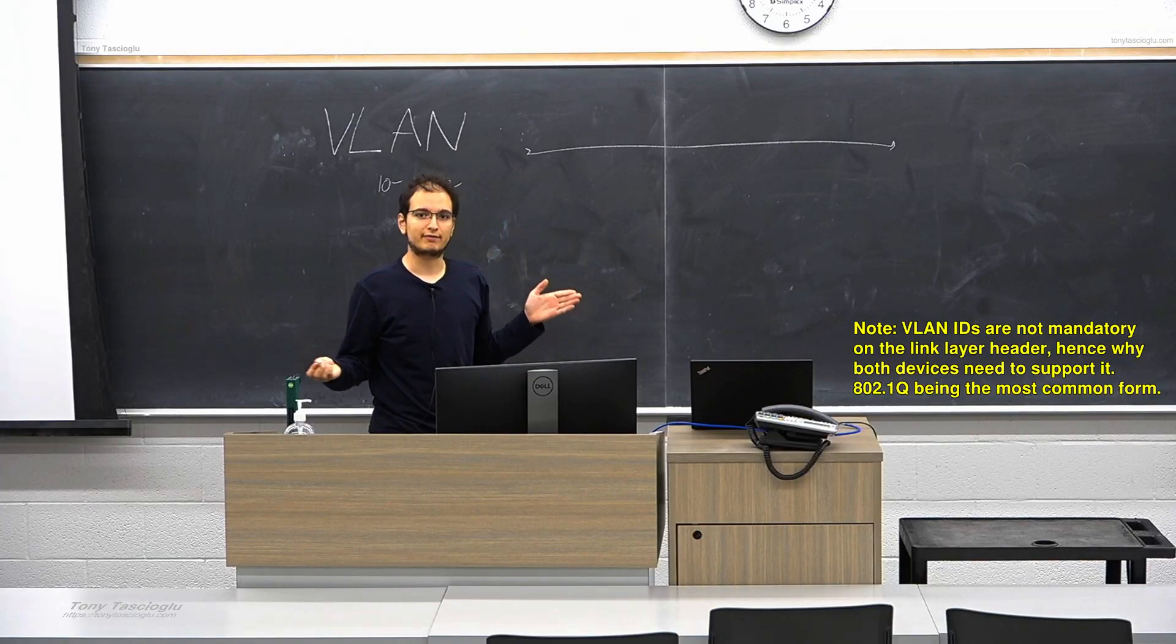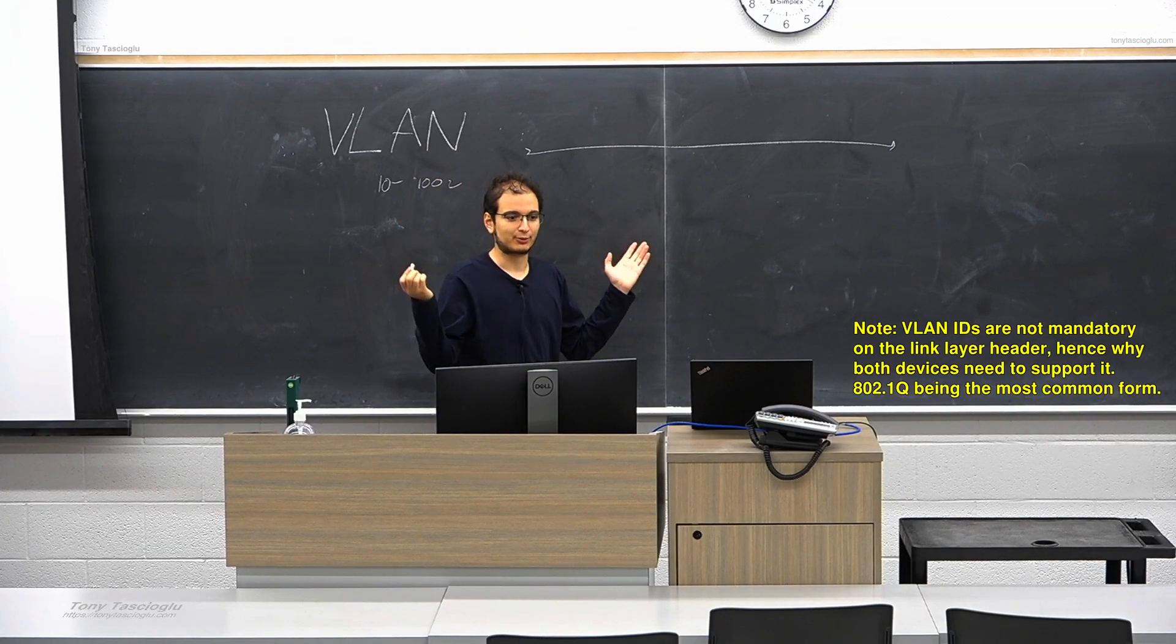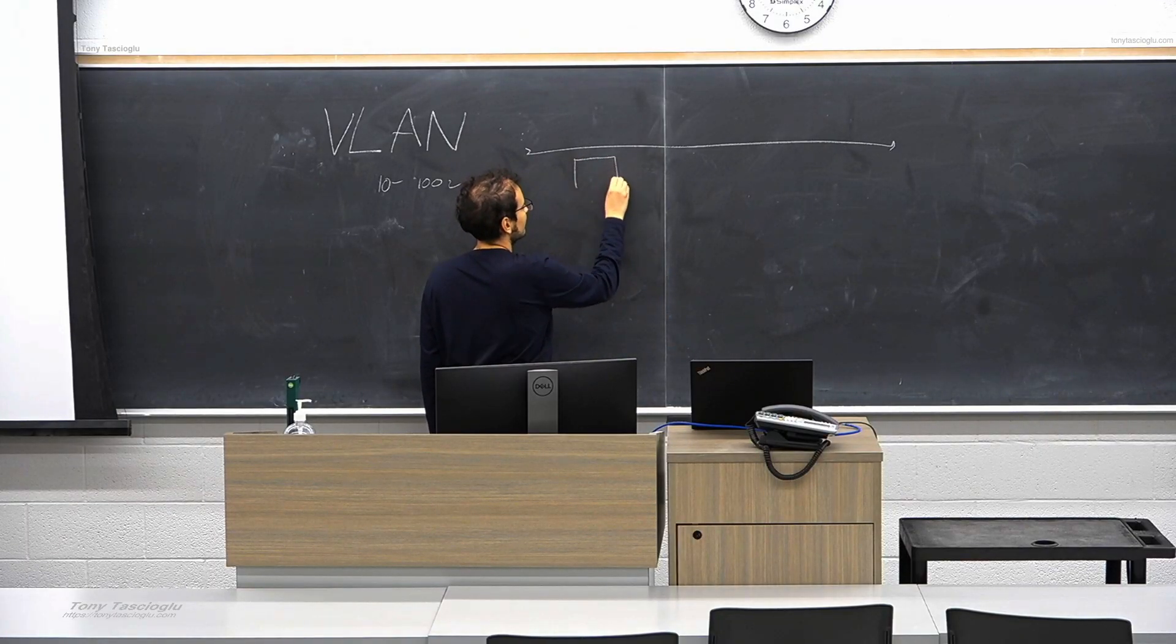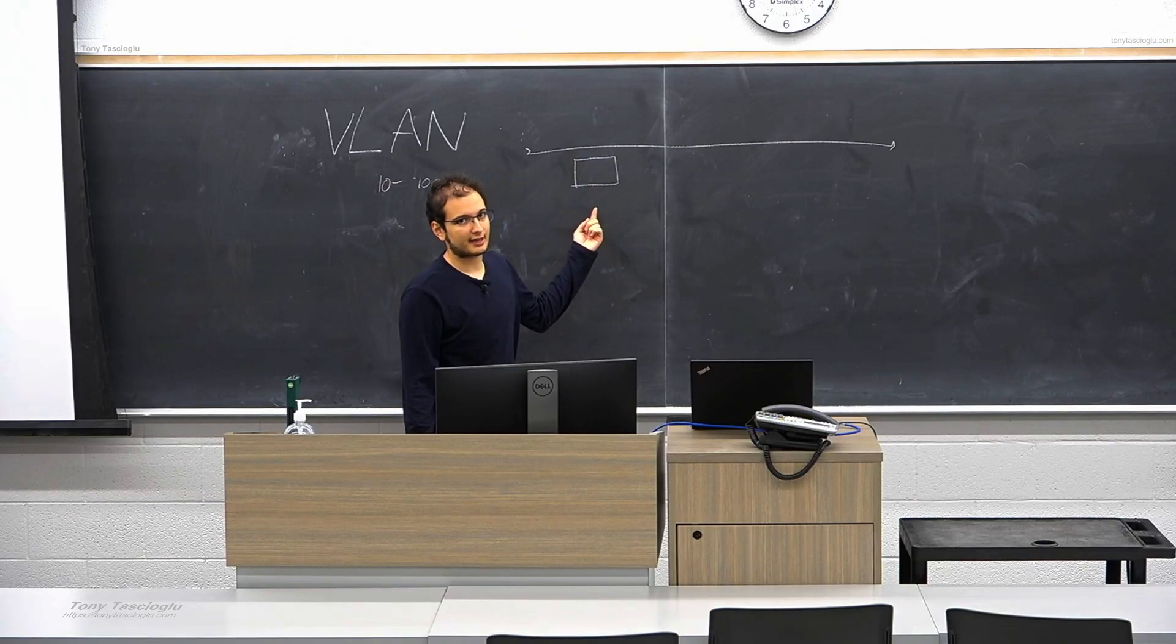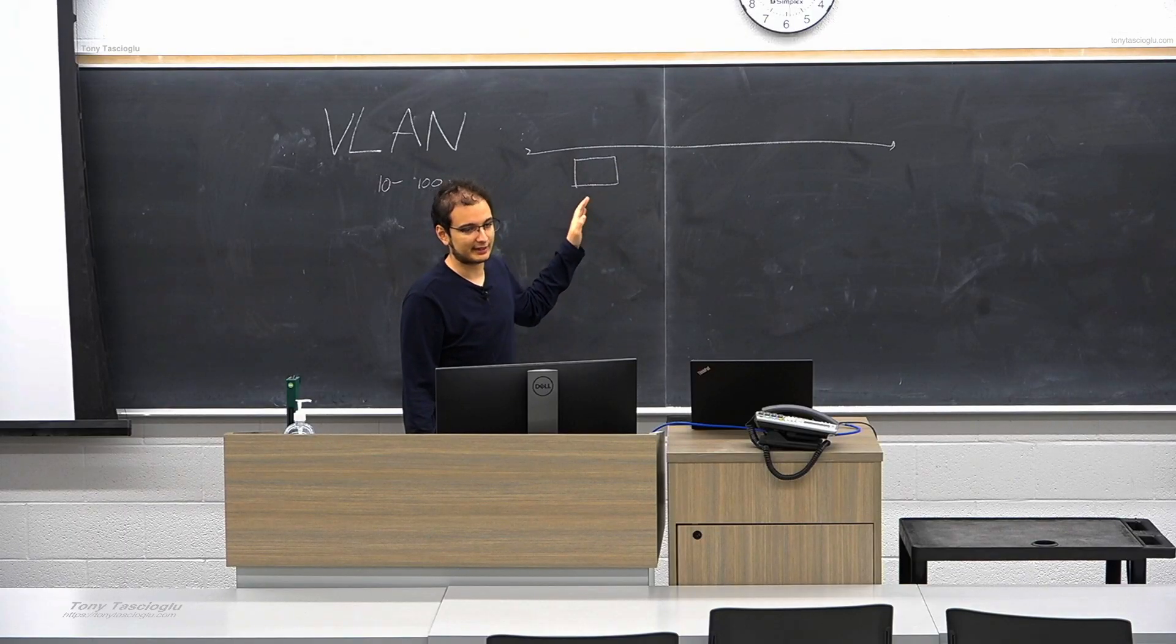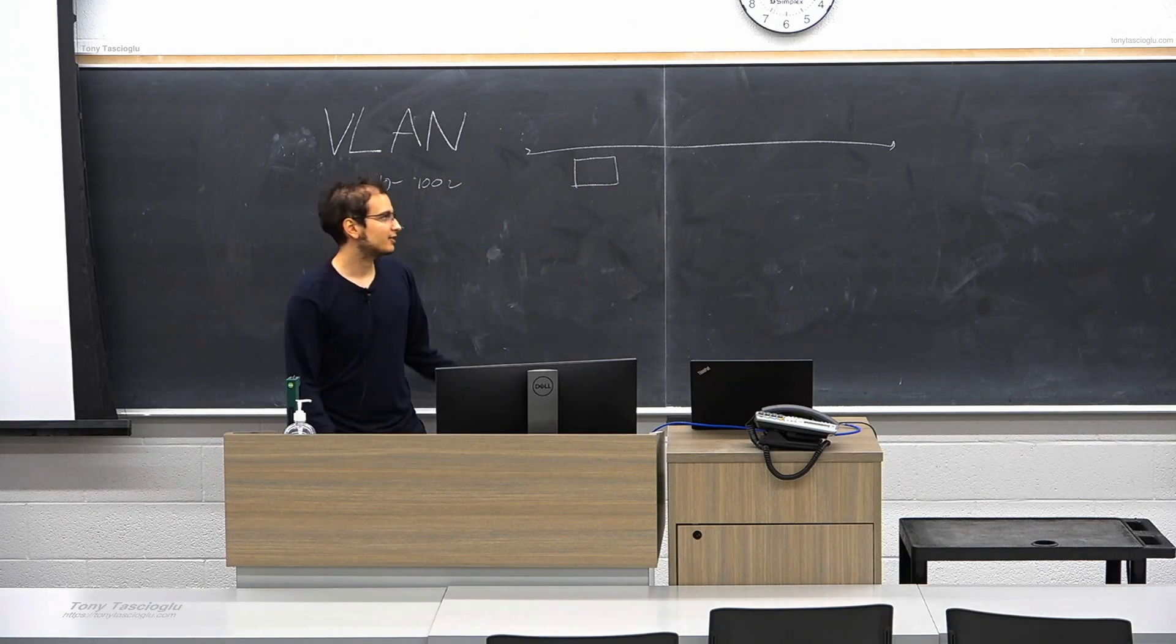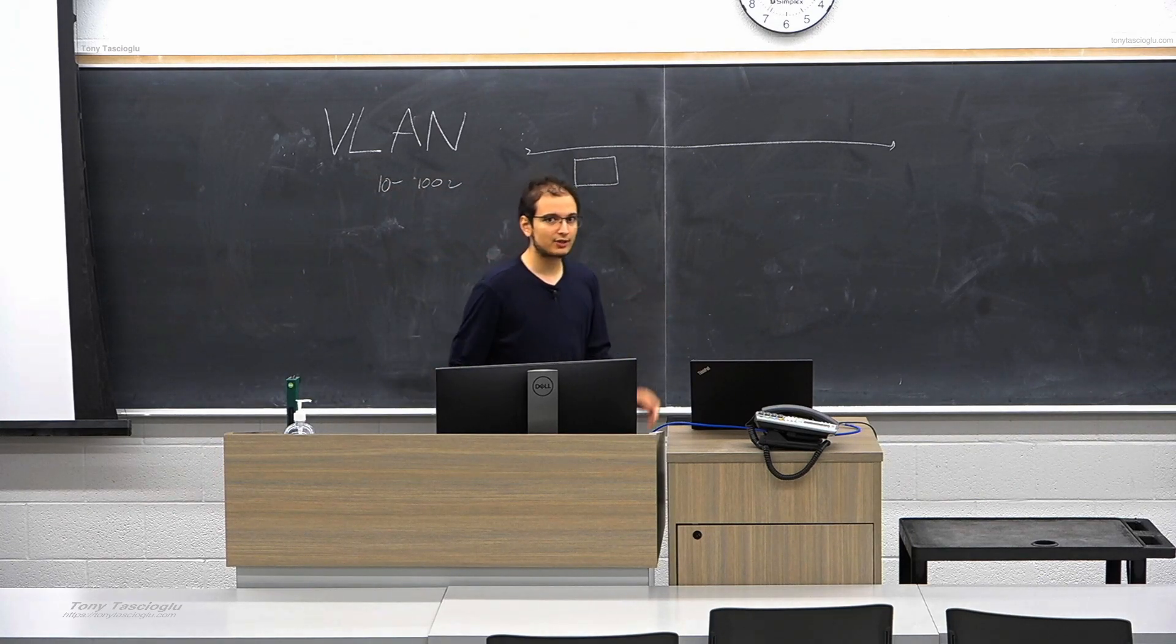So the default VLAN, VLAN 1 as we'll call it, is just the one where the numbers don't have any tags. So if I have packets, these are layer 2 link layer which means that they encapsulate a layer 3 IP packet which encapsulates a transport layer packet.